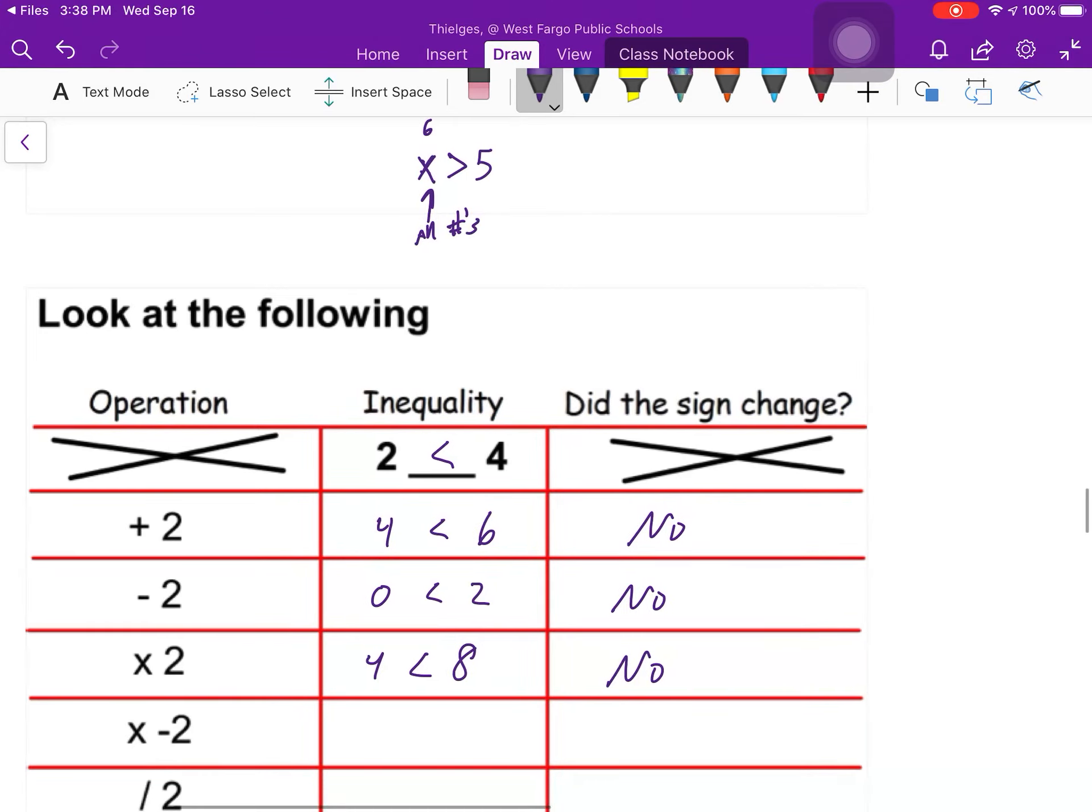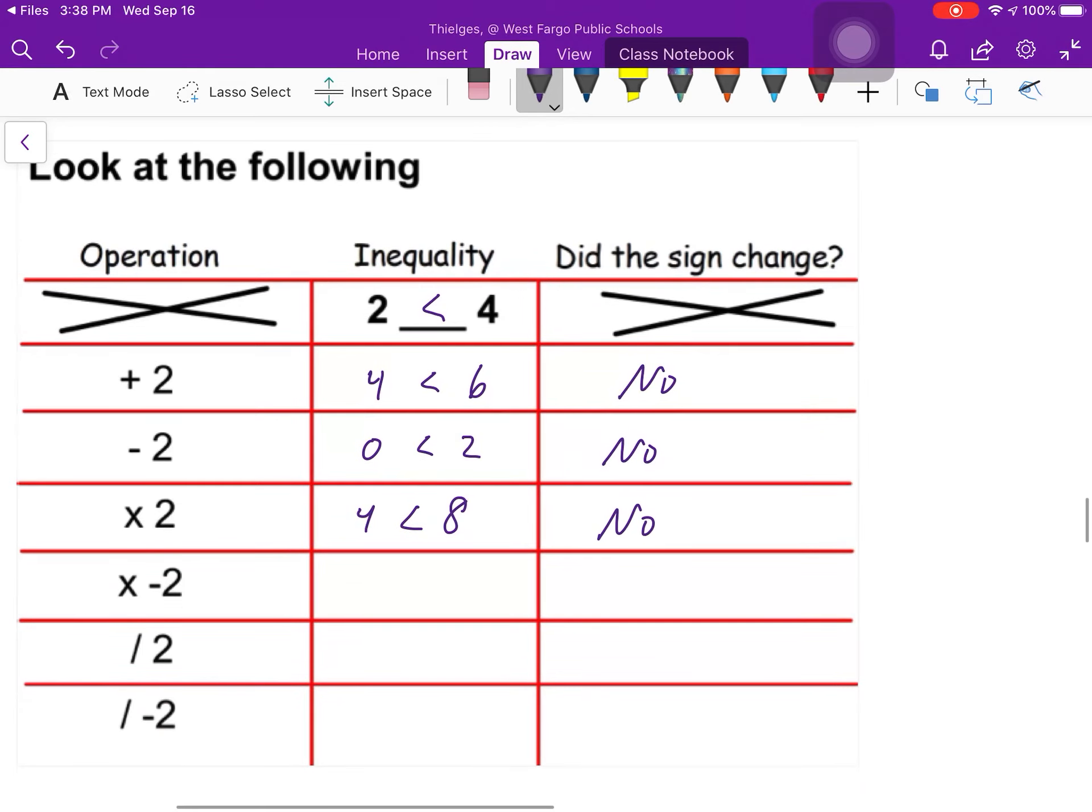You're probably thinking it's always no, no, no. But then when I multiply 2 by negative 2, I get negative 4, and I get a negative 8. Now negative 4 is bigger than negative 8. So did the sign change? Yes. Okay, I'm going to divide by 2. So 2 divided by 2 is 1. 4 divided by 2 is 2. So does my sign change from the original one? Nope.